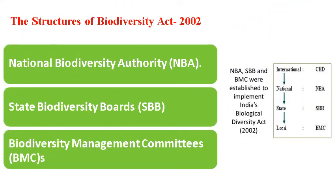In order to implement this Act, four levels of system were formed. As we can see in the slide: CBD at the international level, National Biodiversity Authority (NBA) at the national level, State Biodiversity Board (SBB) at the state level, and Biodiversity Management Committees (BMC) at the local level. NBA and SBB are required to consult BMCs in decisions related to bio-resource-related knowledge within their jurisdiction.